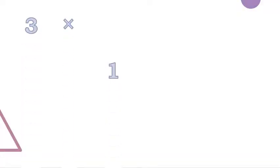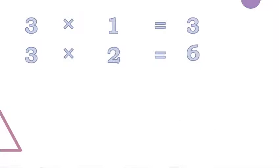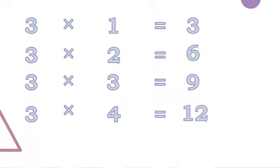Three ones are three. Three twos are six. Three threes are nine. Three fours are twelve. Three fives are fifteen.